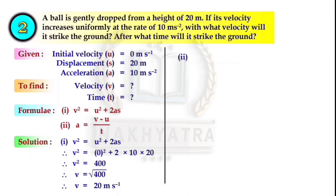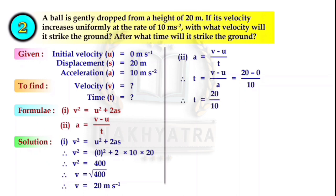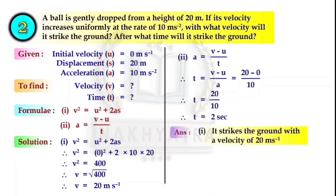For finding the time, we use a = (v - u)/t. Rearranging: T = (v - u)/a = (20 - 0)/10 = 20/10. So T = 2 seconds. The ball strikes the ground with a velocity of 20 meter per second and the time taken to strike the ground is 2 seconds.